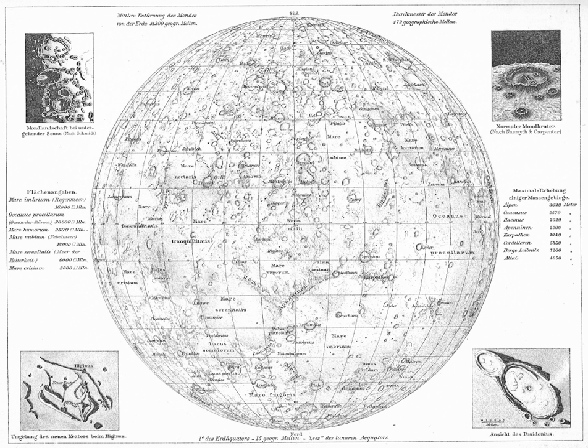See also: astronomical naming conventions, lists of geological features of the Solar System, list of adjectivals and demonyms of astronomical bodies, naming of moons, selenography, and toponymy — the scientific study of place names, their origins, meanings, use and typology.